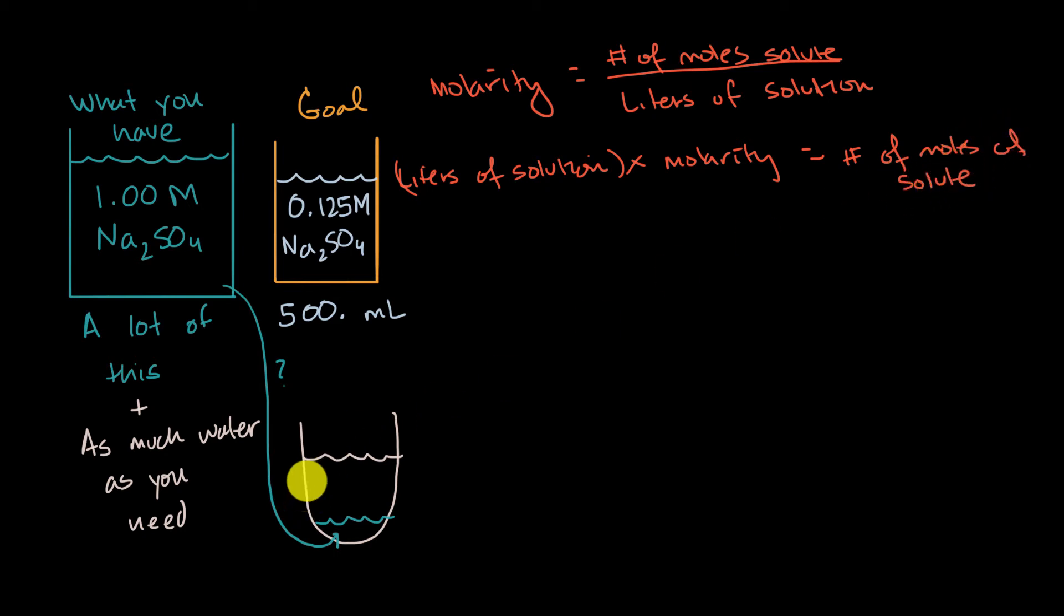So what we can do is say, how many moles of our solute do we need in our goal? Well, to do that, we just have to say we want to eventually have 500 milliliters of solution, or we could rewrite that as 0.500 liters.